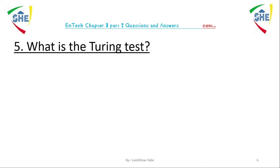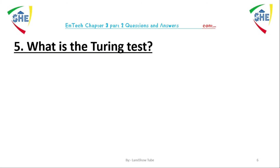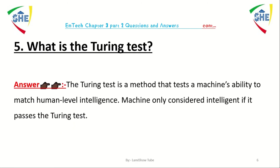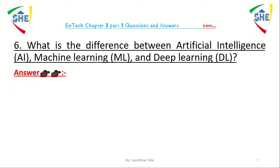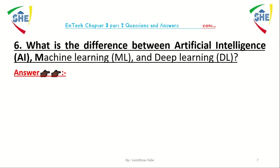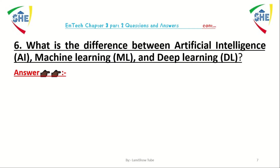Question number five: what is the Turing test? The Turing test is a method for testing machine ability. To say a machine is intelligent, it should pass the Turing test. Question number six: what is the difference between artificial intelligence, machine learning, and deep learning?